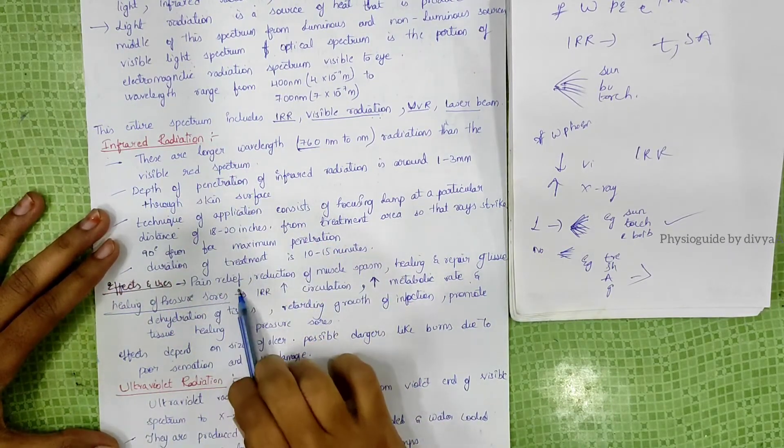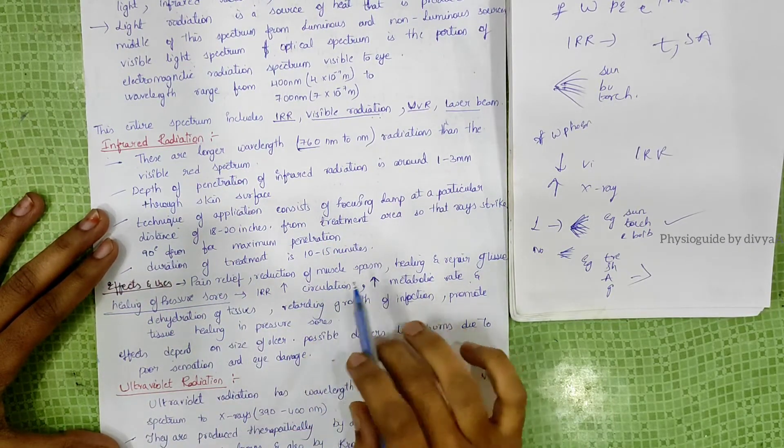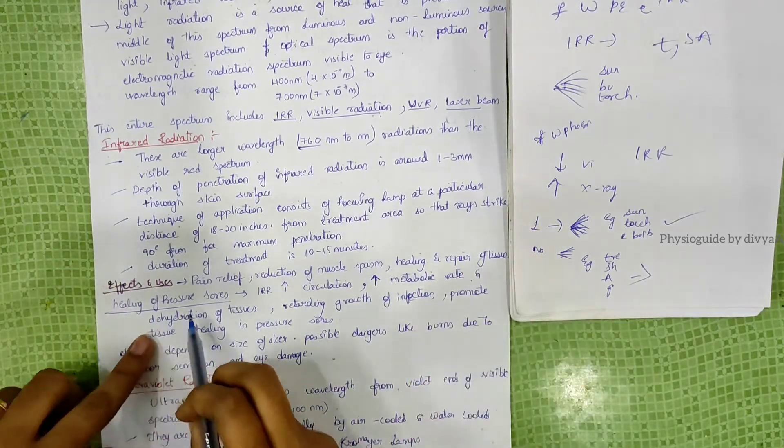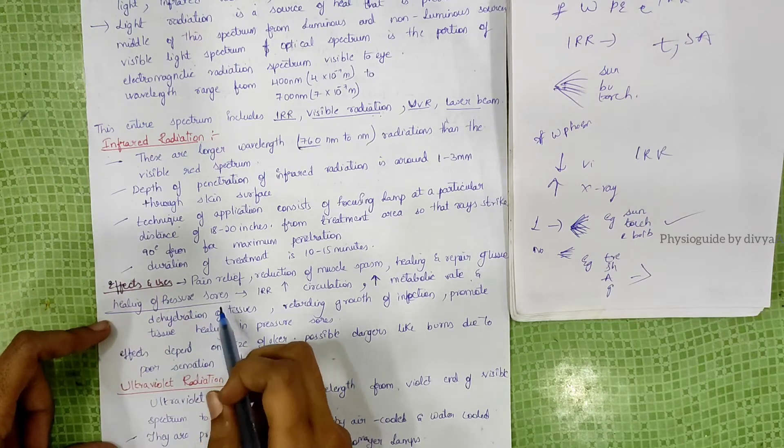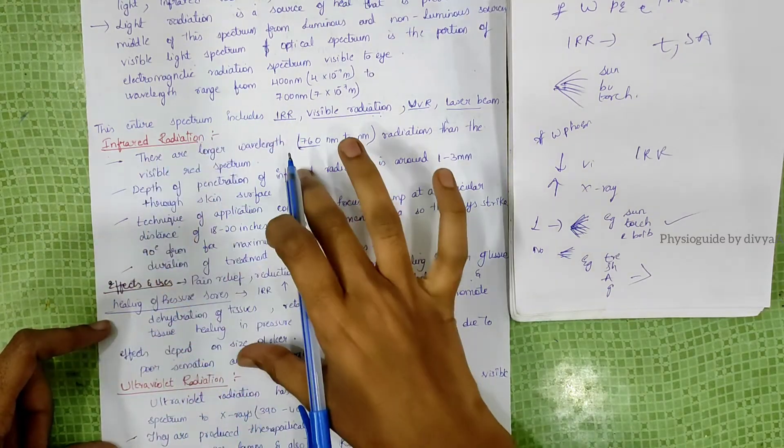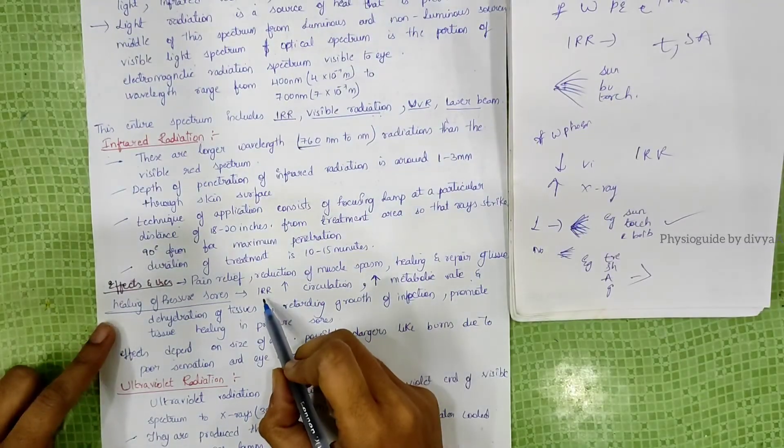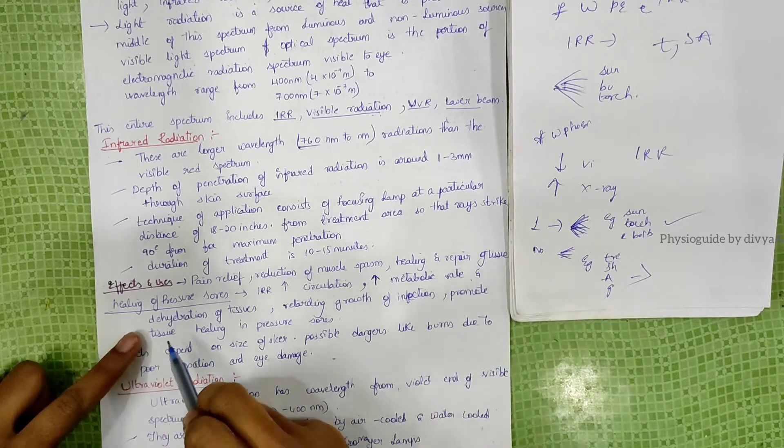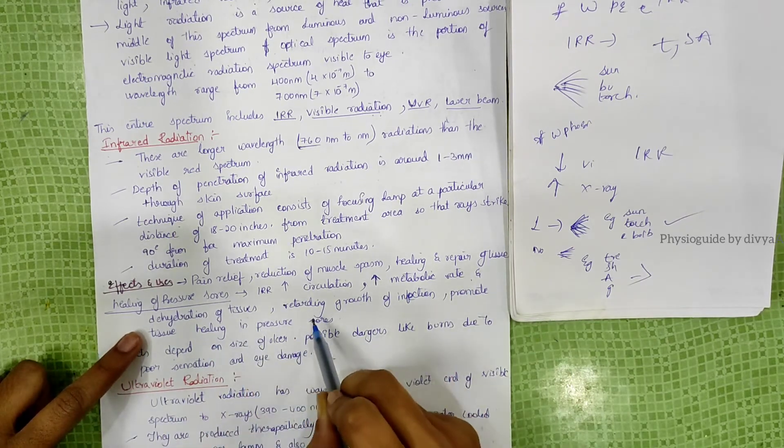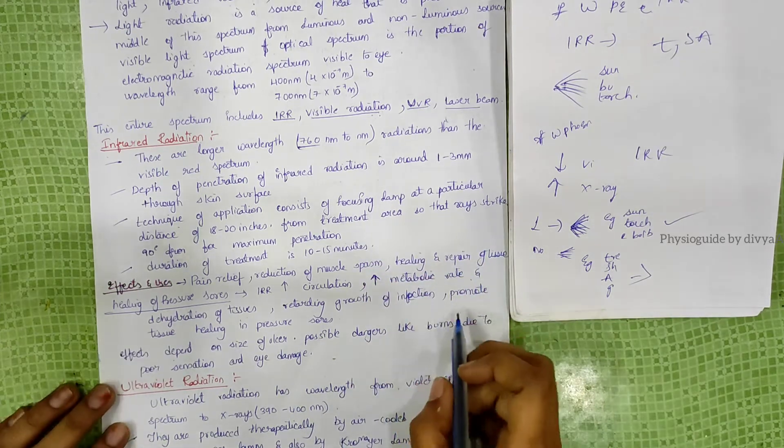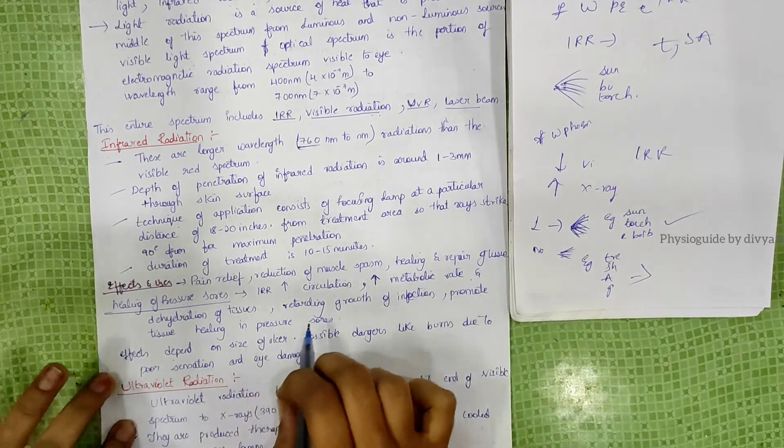Pain relief is seen, reduction of muscle spasms and muscle-related problems, healing and repair of tissue, and healing of pressure sores. With infrared radiation, there is increase in circulation, increase in metabolic rate, dehydration of tissues, retarding growth of infection, and promoting tissue healing in pressure sores.